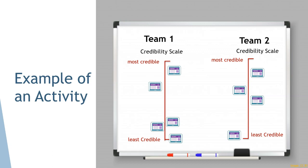This is a credibility scale game. There will be two teams with approximately four to five students per team, with four to five articles relating to the same topic. The students are going to rank those articles from most credible to least credible. Additionally, not only do they have to rank them from most to least, but they have to decide where on the credibility scale the article is most suited.